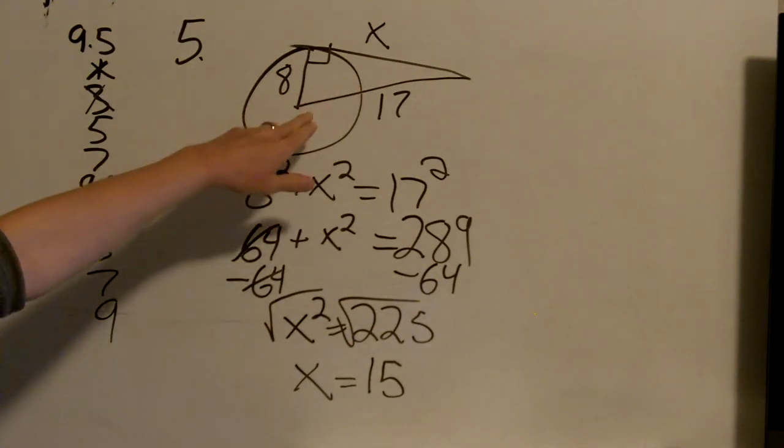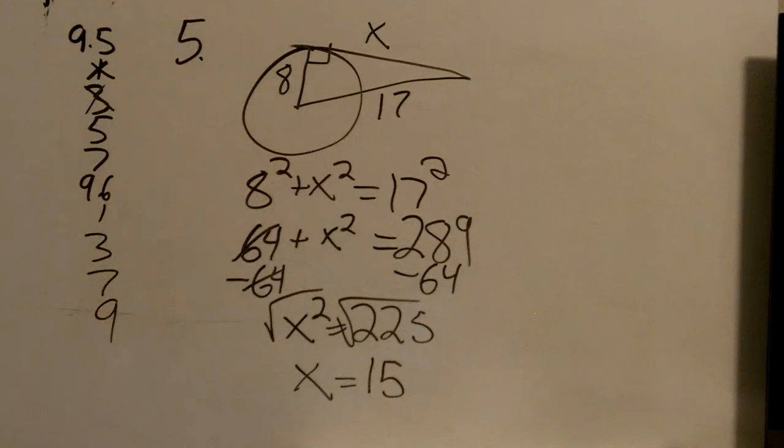So remember, the thing that goes from the center to the outside is always the hypotenuse. The thing that should be by itself in a problem like this.